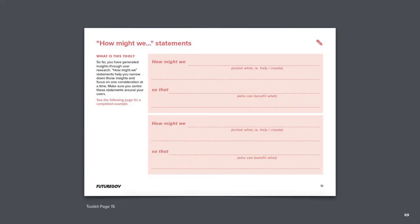Each person should now have in front of them the how might we worksheet from the toolkit. Working individually, take an insight statement and try to write some how might we statements yourself using the template provided. You have 15 minutes for this activity. You can now pause this video and resume it after you've completed the activity.